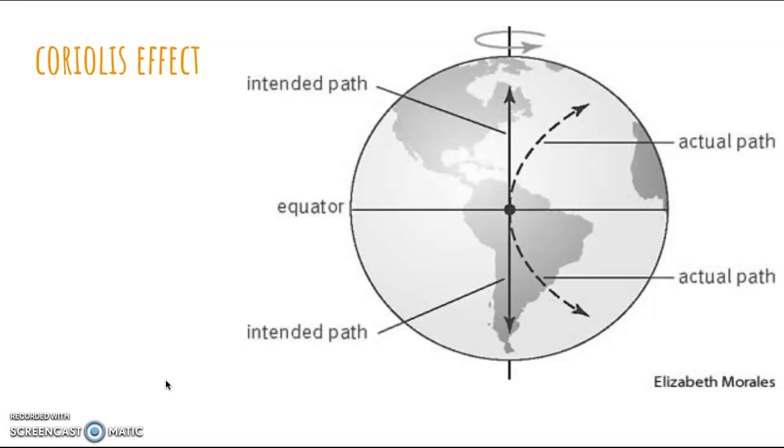This picture shows the Coriolis effect. The intended path is a straight line, but the actual path is a curved line. The Coriolis effect is caused by the Earth's rotation. This effect does not impact wind speed, only wind direction. The deflection of the Coriolis effect is greatest at the poles and decreases to zero at the equator.